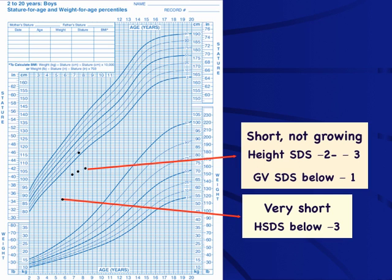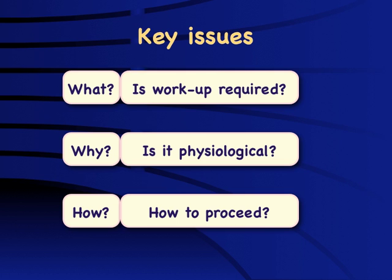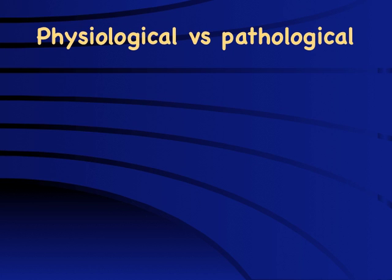Consider a child whose height is between the third and tenth centile with concerned parents but a normal mid-parental height — ideally, not much evaluation is needed. However, if we find this child was quite tall before and has not grown anything in the last two years, this indicates a pathological acquired cause of growth retardation. Crossing of two or more percentile lines is significant. So: very short, short and not growing, or not growing at all — all require evaluation.